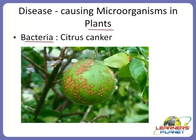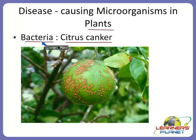The first category is bacteria. One of the diseases of bacterial infection is citrus canker. This citrus canker is a disease which is found in citrus fruits. Examples include grapes, lemon, lime, and oranges — all these come in the citrus fruit category.